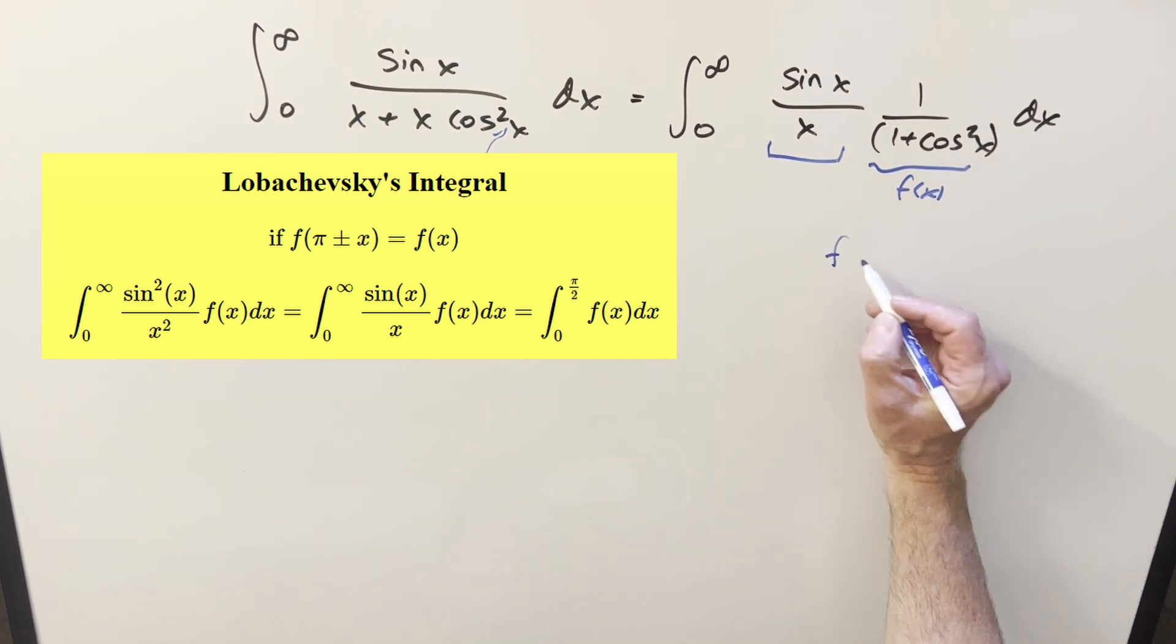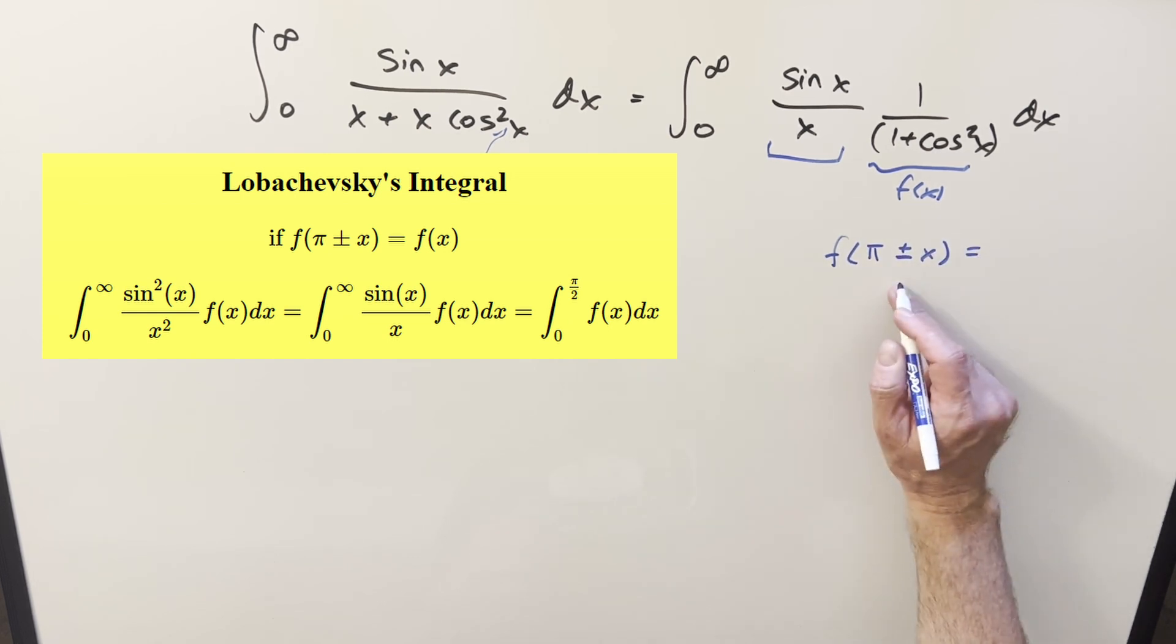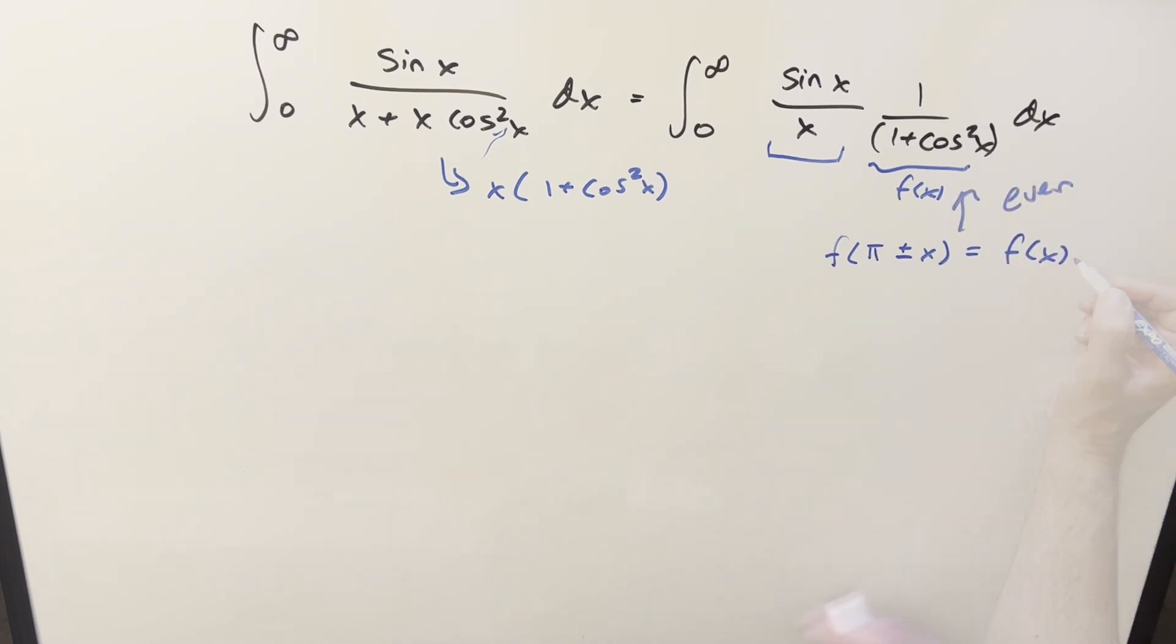Now, I like to do this kind of carefully. What we need is we need this to be pi periodic. And so we need this, whether it's plus or minus, to be equal to f of x. So this check is going to go pretty quick. What we want to look at, all I really care about is the cosine, the ones aren't going to change anything.